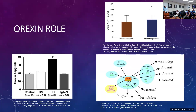Orexin is a neuropeptide that regulates feeding behavior and promotes wakefulness. A study showed that patients on hemodialysis have significantly higher levels of orexin. A separate study examining plasma orexin-A levels found that patients with insomnia disorders have significantly higher orexin levels at 62.4 compared to normal sleepers at 54.8.